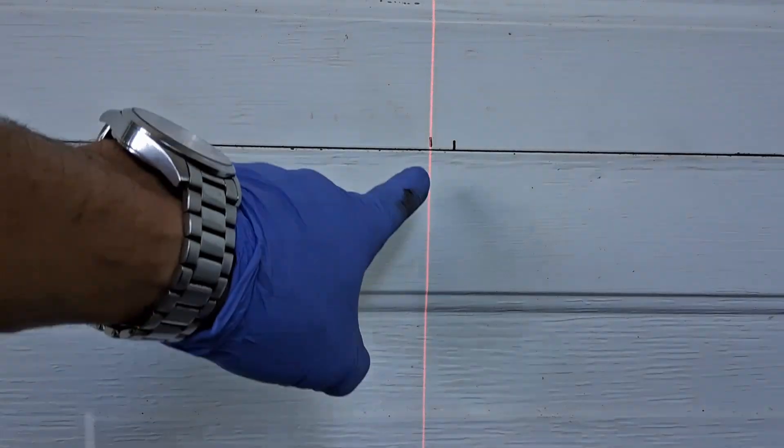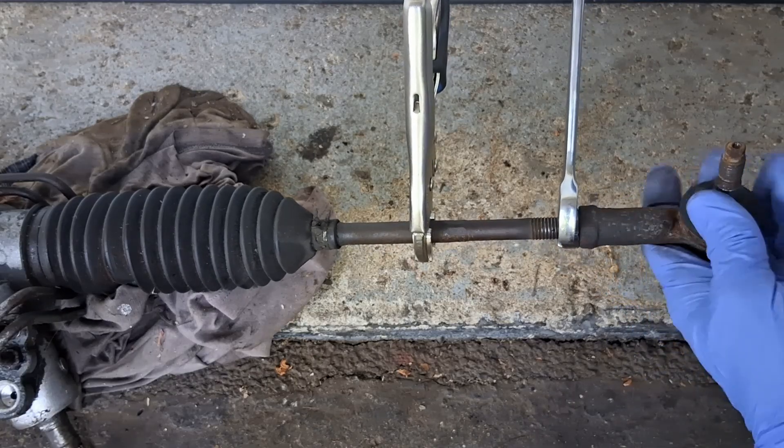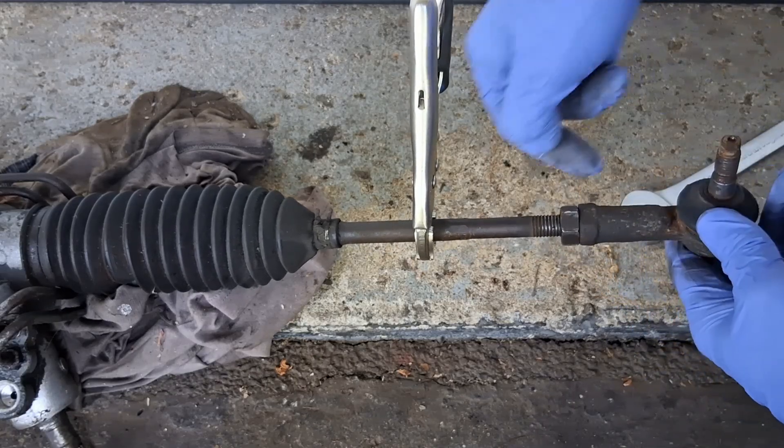Well, not really. When we set this point and then tighten the counter nut, that must be tightened, we actually press on the tie rod end and it moves the line again.